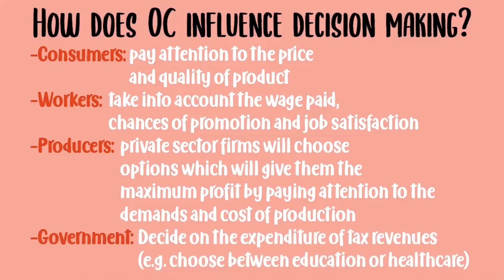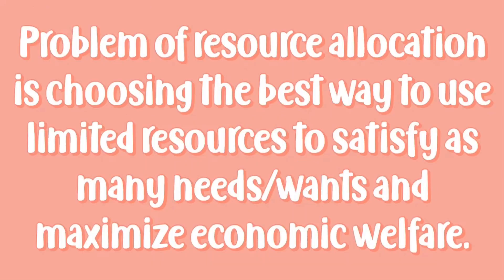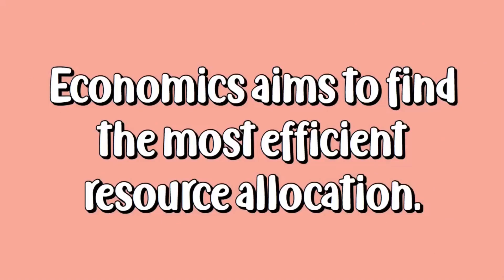Then we have the government, and they will have to decide on the expenditure of tax revenues. For example, they would have to choose between improving education or improving healthcare, and where to spend more on. In conclusion, the problem of resource allocation is choosing the best way to use limited resources to satisfy as many needs and wants as well as maximizing economic welfare. Economics aims to find the most efficient resource allocation due to the limited resources available.